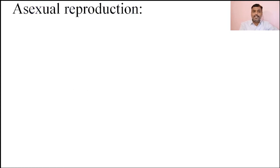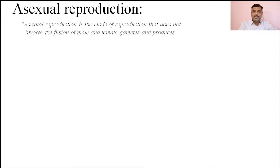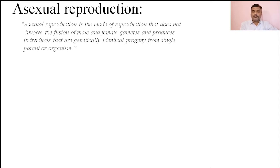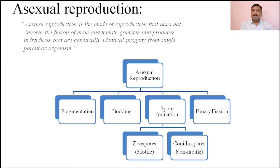First of all we will see the process of asexual reproduction. Asexual reproduction is a mode of reproduction that does not involve the fusion of male and female gametes, and produces individuals that are genetically identical progeny from a single parent organism. Simply put, it is a process of reproduction carried out without the formation and fusion of gametes.